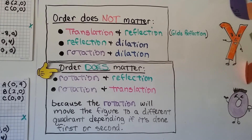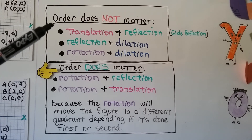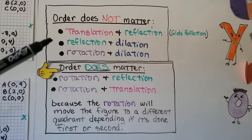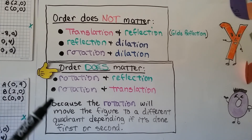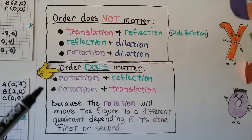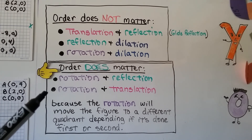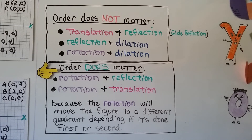So to summarize: the order does not matter for a translation and reflection (like a glide reflection), a reflection and dilation, or a rotation and dilation. But the order does matter for a rotation and reflection, or a rotation and translation, because the rotation will move the figure to a different quadrant depending on whether it's done first or second.